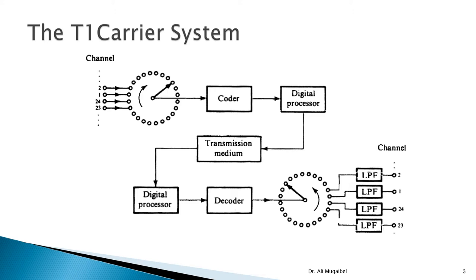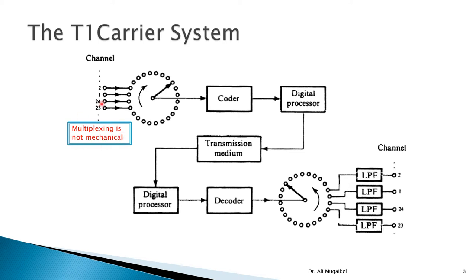This is a block diagram of the T1 carrier system. It starts with 24 channels — this is the American standard. Assume there are 24 telephone channels to be communicated. This diagram shows the multiplexing process: 24 different users will be multiplexed into one line. Although it shows a mechanical representation, this is done using electronic circuits. The switch goes to user one, two, three, four and rotates over all 24 users — this is time division multiplexing into one channel.